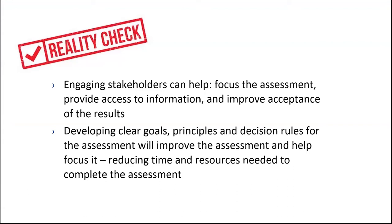Let's review the important aspects of the first two elements of determining the scope of the assessment of alternatives. First, stakeholder engagement is critical — engaging stakeholders will help focus the assessment, provide access to information, and improve acceptance of the results. But it takes forethought and commitment to devote the time and resources necessary to identify and engage with the right stakeholders at the right time. Second, don't underestimate the importance of establishing clear goals, principles, and decision rules for the assessment — this will improve transparency and focus the assessment, reducing the time and resources necessary for completion. As a practitioner, it is your role to help the organization see how the goals, principles, and decision rules you're proposing work with their overall business process.